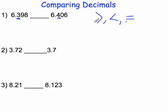Because 4 is greater than 3, we know that 6 and 406 thousandths is greater than 6 and 398 thousandths.